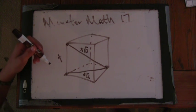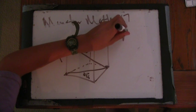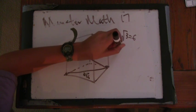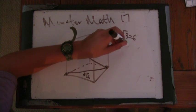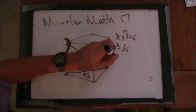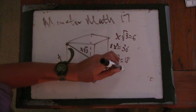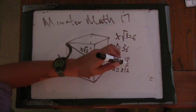Cool. Okay. And x root 3 is 6. 3x is, or actually 3x squared is 36. x squared is 18. x is 3 root 2. Okay.